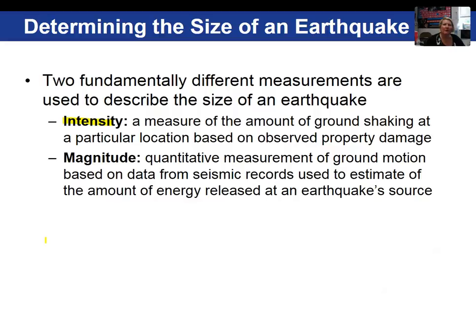One scale used in determining the size of an earthquake is called intensity scales, which measure the amount of ground shaking at a specific location — basically, an observer looks at the damage done in that area. Magnitude scales are quantitative measurements of ground motion, based on seismic records, and measure the amount of energy released at the point of the earthquake.